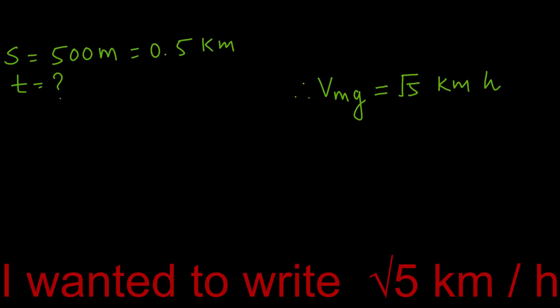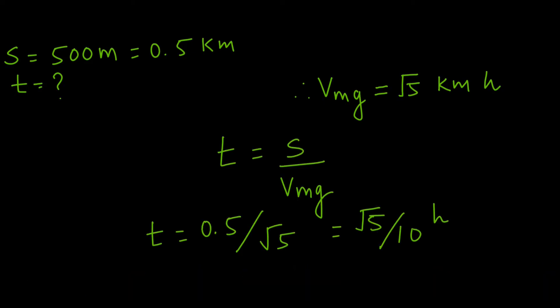You have both displacement and velocity. Now you can easily find the time. So, he will take time equal to root 5 by 10 hour to reach the point exactly opposite to the point he has started from. You can change this to seconds or to decimals.